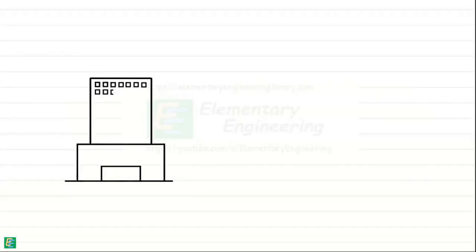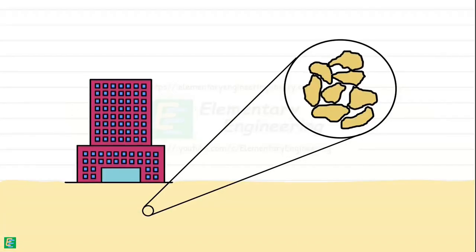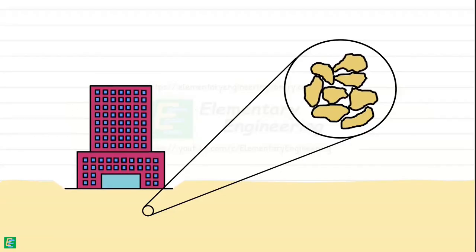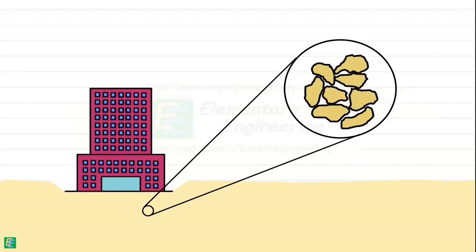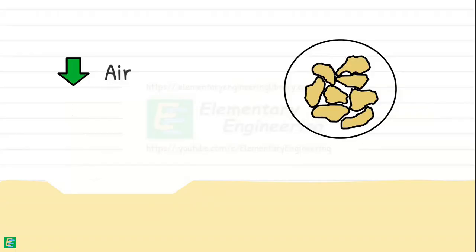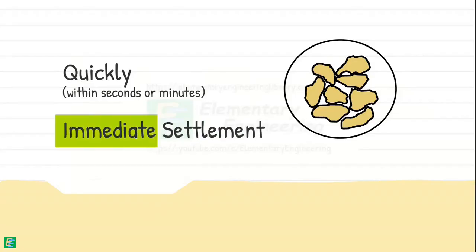When a structure or load is placed on the ground, soil particles undergo some movement and repositioning to distribute and accommodate the applied stress. They rearrange themselves and pack themselves closer, reducing the air or water-filled voids between them, which leads to the decrease in soil volume. This rearrangement takes place very quickly, usually within seconds to minutes after the load is applied, hence the term immediate.